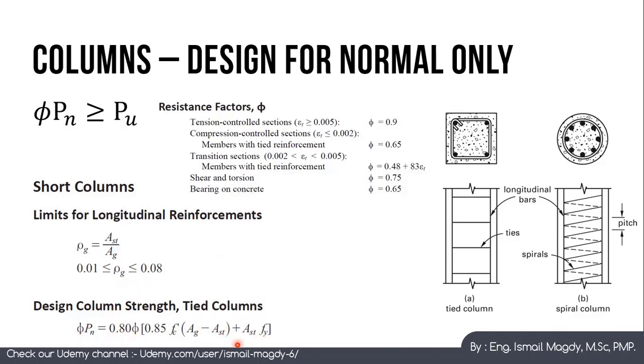This is the governing formula to calculate the nominal force of the column which is Phi Pn equals 0.85 multiplied by 0.85 Fc prime multiplied by area net which is area gross minus area steel, plus area steel multiplied by F yield. So this term here is for the stress component or the strength component of the concrete and this term here is for the strength component of the steel.